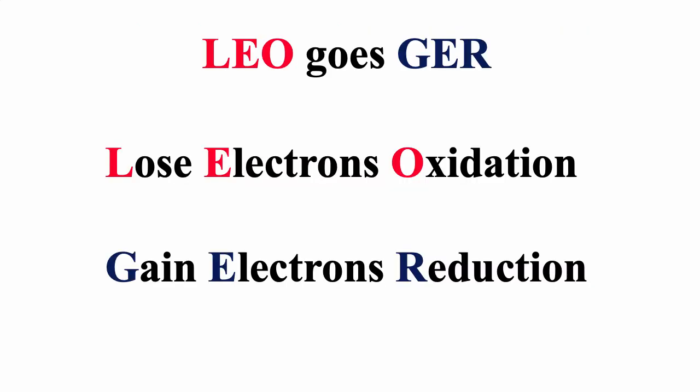One way of remembering what oxidation is and what reduction is, is by using the mnemonic LEO goes GER. LEO: lose electrons is oxidation. GER: gaining electrons is reduction.